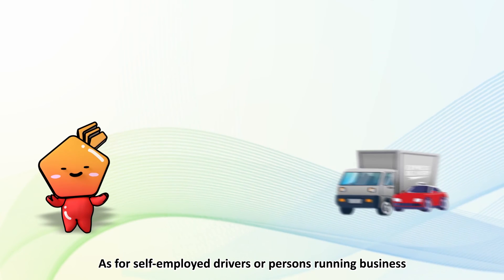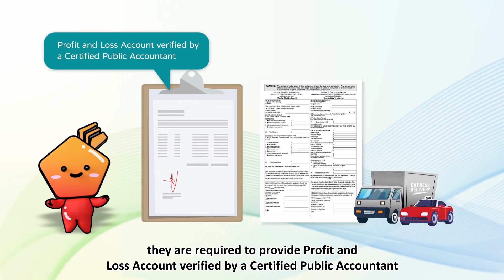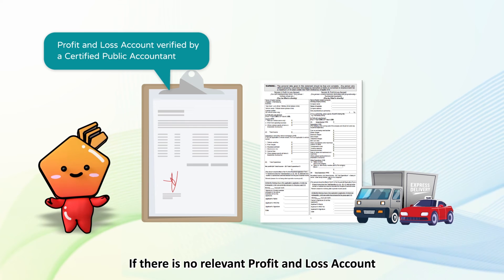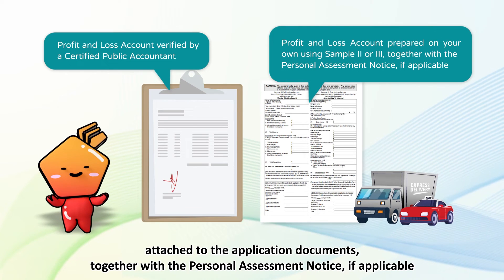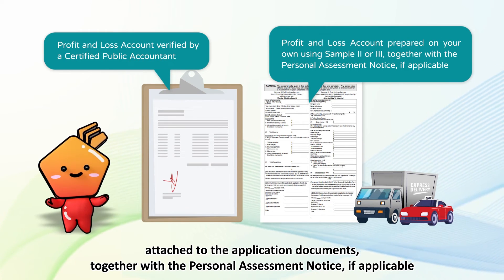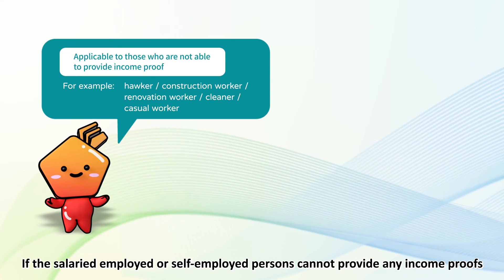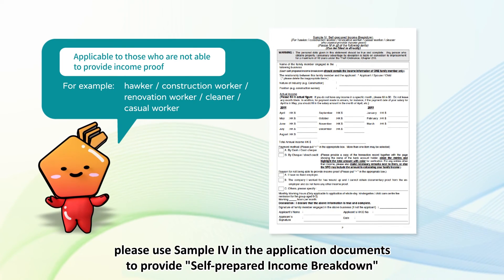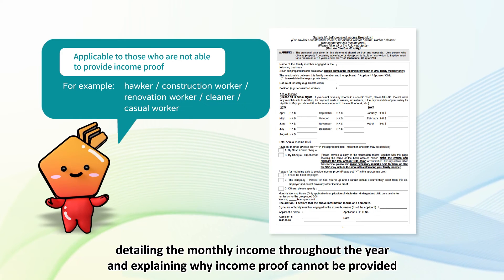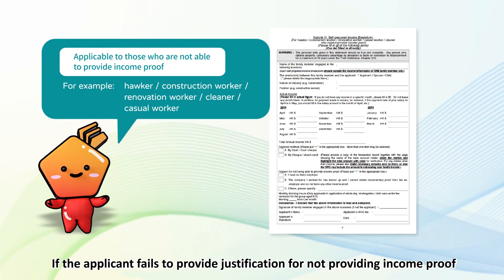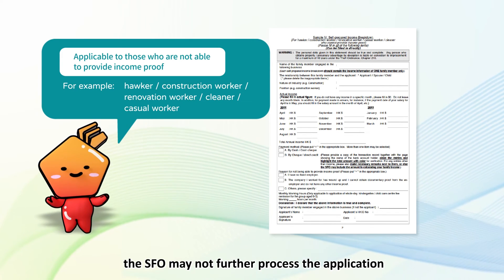As for self-employed drivers or persons running a business, they are required to provide a profit and loss account verified by a certified public accountant. If there is no relevant profit and loss account, please submit a profit and loss account prepared on your own using sample two or three attached to the application documents, together with the personal assessment notice if applicable. If salaried employed or self-employed persons cannot provide any income proofs, please use sample four in the application documents to provide a self-prepared income breakdown, detailing the monthly income throughout the year and explaining why income proof cannot be provided. If the applicant fails to provide justification, the SFO may not further process the application.